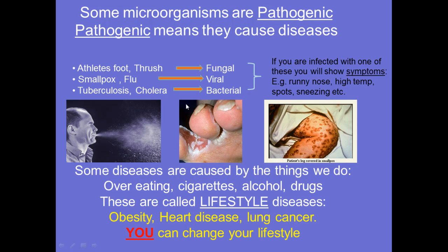Here are some examples of pathogens. There are types of fungus that cause disease: athlete's foot and thrush — specifically the one that causes thrush is called Candida. Viruses that are pathogenic include smallpox and flu, and bacterial infections which are pathogenic include tuberculosis and cholera. This means not all microorganisms are bad for you — not all of them cause disease, but the few that do are referred to as pathogens.